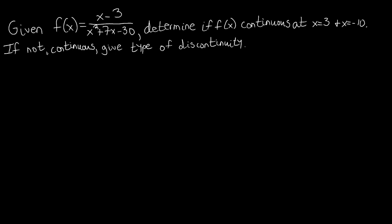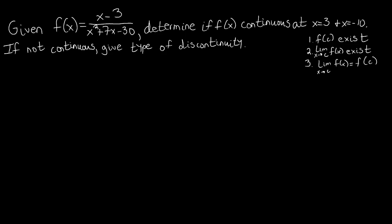We're also asked that if it's not continuous at any one of those points, we want to find the type of discontinuity at that point. When we're asked about continuity at a point, there are three things we need satisfied. Calling both values c: first, does f(c) exist? If we plug these values into our function, do we return a defined value? Second, does the limit as x approaches c of f(x) exist — is the limit defined? And lastly, does the limit as x approaches c of f(x) equal f(c)? If all three are satisfied, our function is continuous at the point in question.